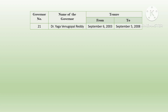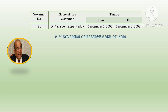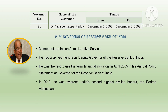The twenty-first governor was Dr. Yaga Venu Gopal Reddy (YV Reddy). His tenure was from September 6, 2003 till September 5, 2008. He was a member of the Indian Administrative Service and had a six-year tenure as deputy governor of RBI. He was the first to use the term 'financial inclusion', using it in April 2005 in his annual policy statement as governor. In 2010, he was awarded India's second highest civilian honor, the Padma Vibhushan.